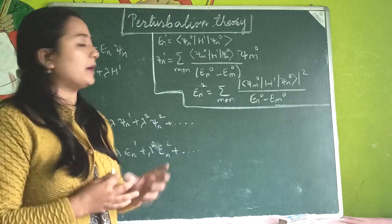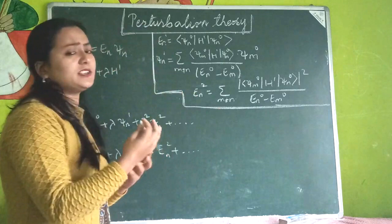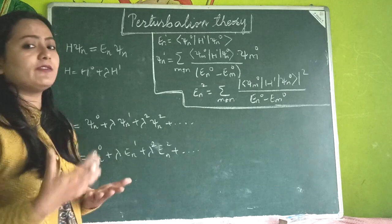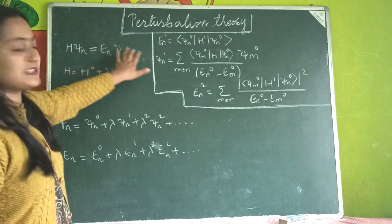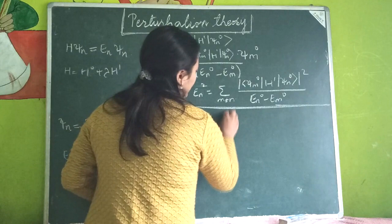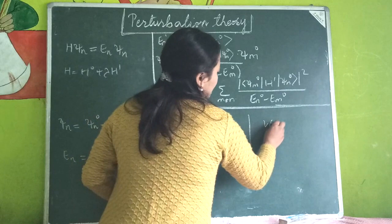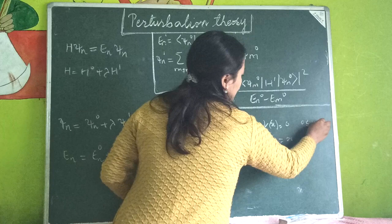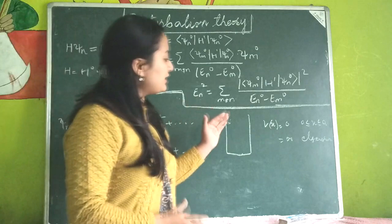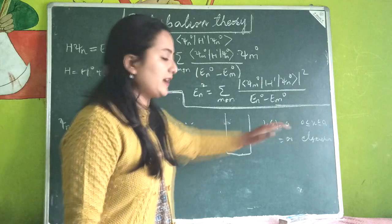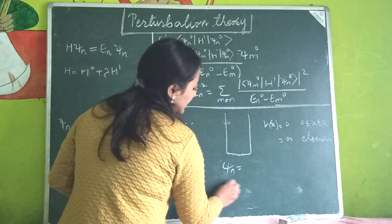What we do is we have some exact solutions and on top of that we apply some perturbation, and then we find our new eigenstates. When we are solving Schrödinger's equation - H ψ equals E_n ψ - we solve this for different forms of potentials, such as the infinite square well, which mathematically is zero inside and infinite elsewhere.